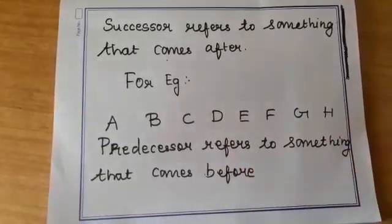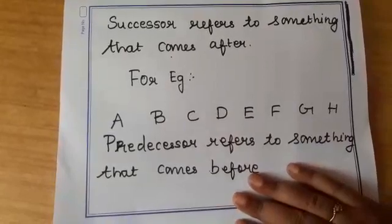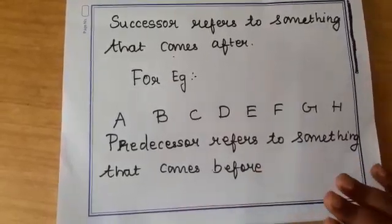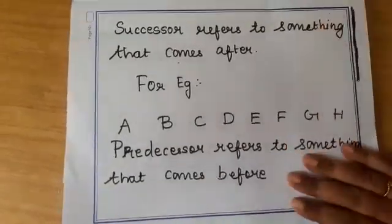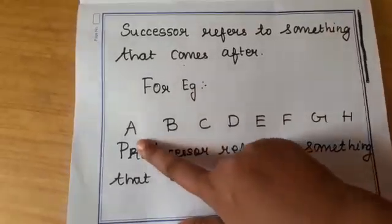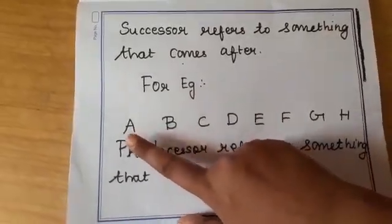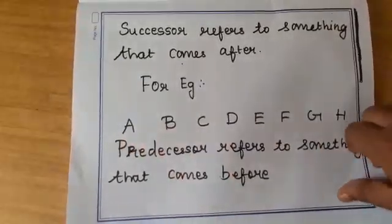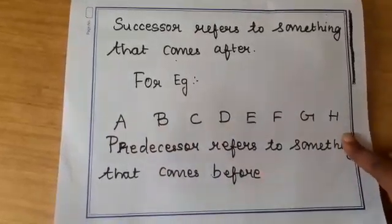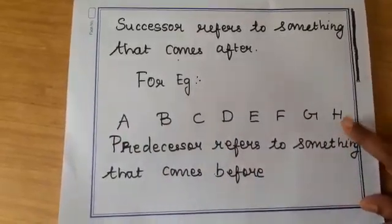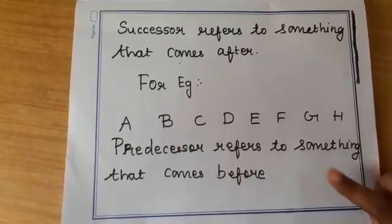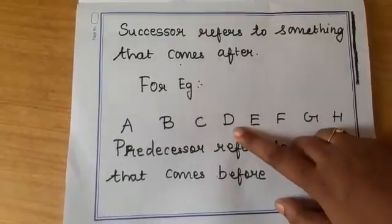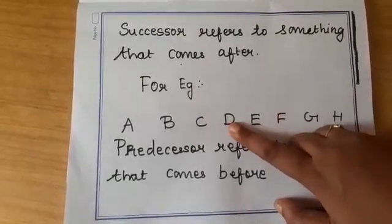So moving to predecessor, predecessor refers to something that comes before, that is it is opposite of the successor. Again I am considering the same example A to H. So here what will be the predecessor of H? Predecessor of H will be G. What will be the predecessor of D? Predecessor of D will be C.